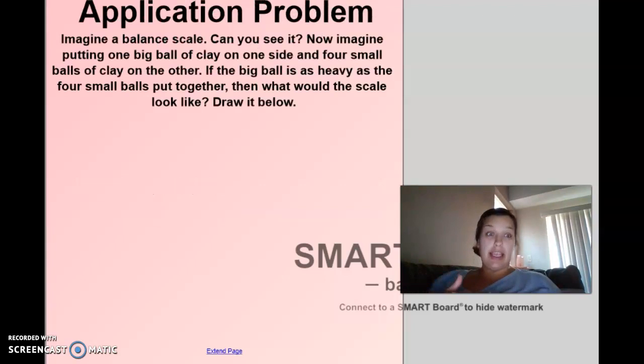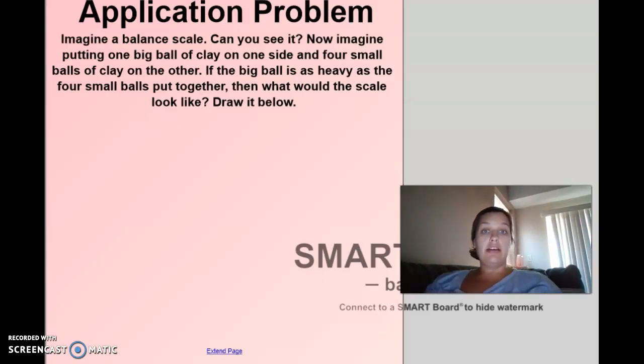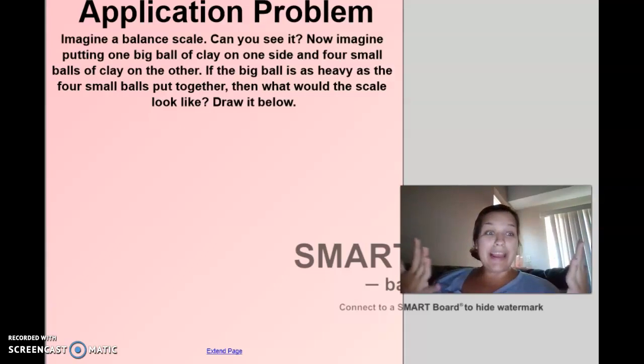So we've been talking a lot about the balance scale. And remember, we think of it like a seesaw. If something's heavier, the heavier object goes down and the lighter object stays up. If it's balanced, I'm straight across. So I want you to close your eyes and imagine that I took one big ball of clay and put it on one side. What would happen to my scale when I did that? Right. It would go down because the ball of clay would be heavier than having nothing on the other side. But then I decided to take another big ball and I broke that big ball into four smaller balls of clay. The big ball is as heavy as the four small balls all put together.